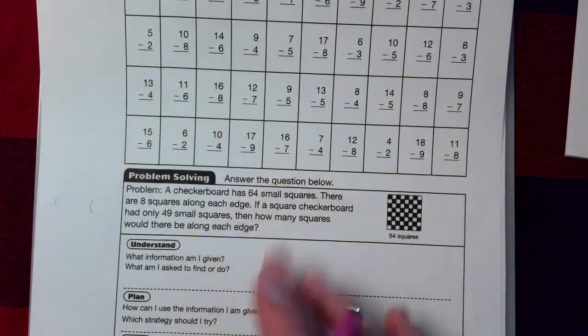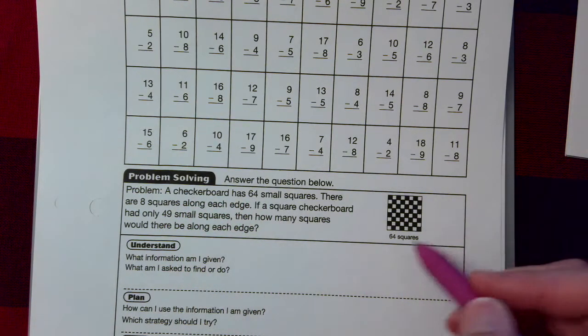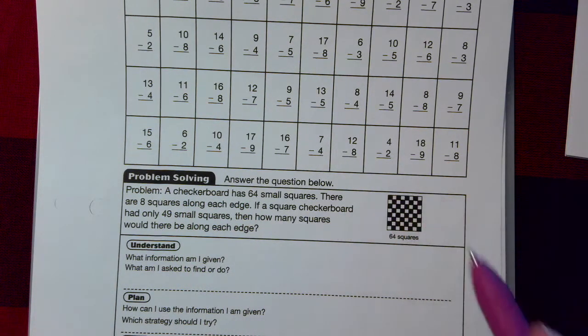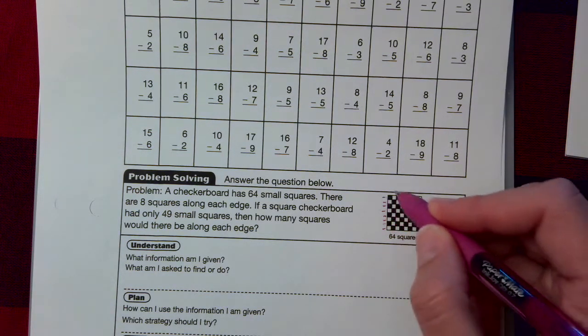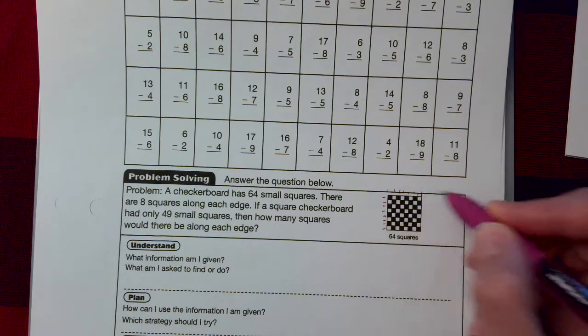And at the bottom, our problem today says a checkerboard has 64 small squares. There are 8 squares along each side: 1, 2, 3, 4, 5, 6, 7, 8, and then 1, 2, 3, 4, 5, 6, 7, 8.